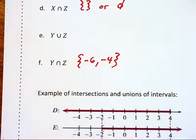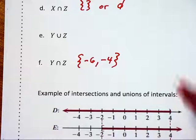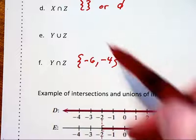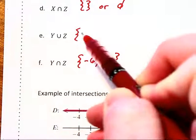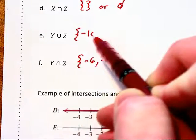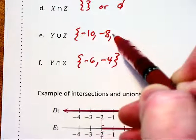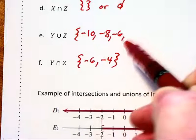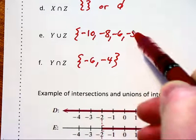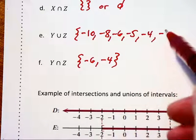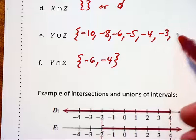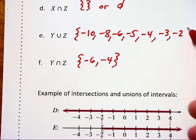The union is going to be what we get when we join the two sets together, only writing negative six and negative four once each. So we will have the set of negative ten, negative eight, negative six, negative five, negative four, negative three, and negative two.